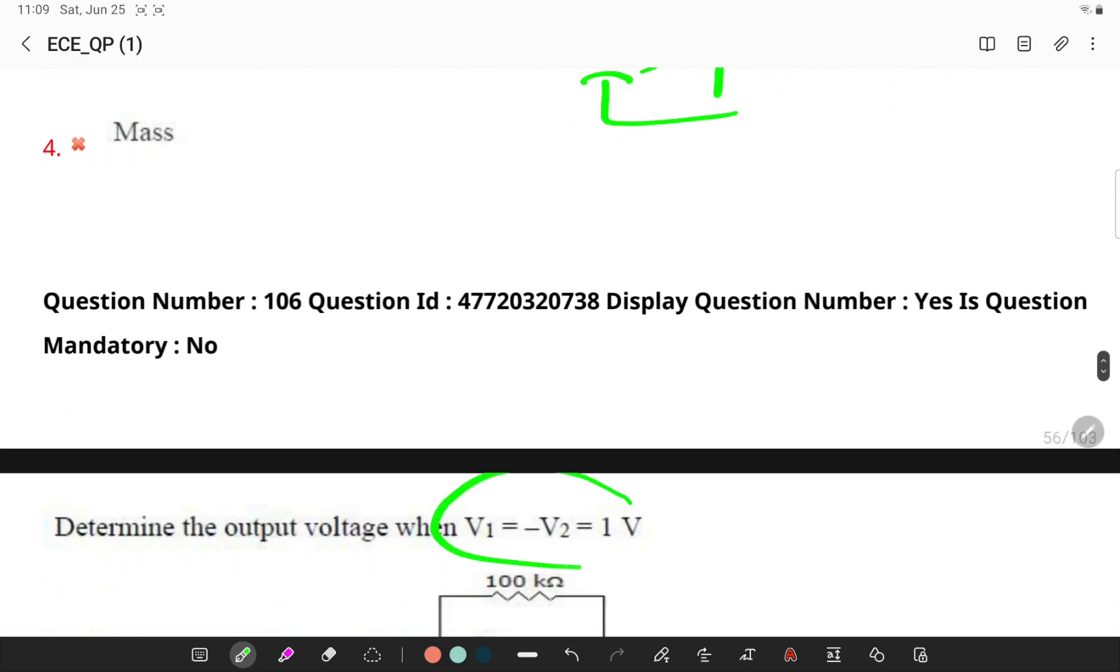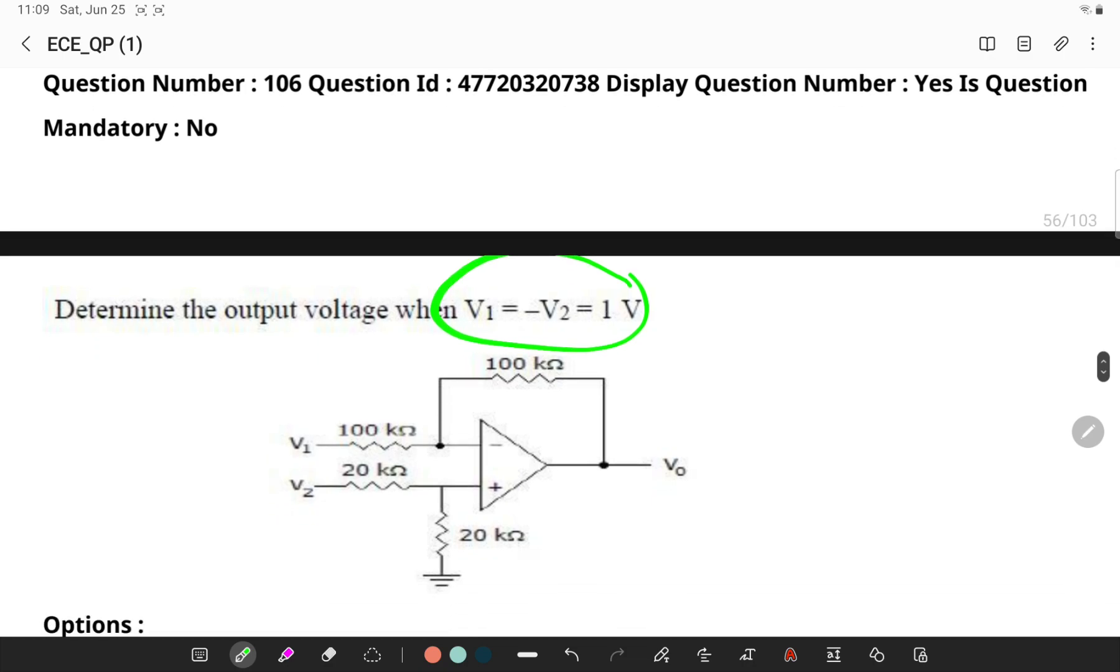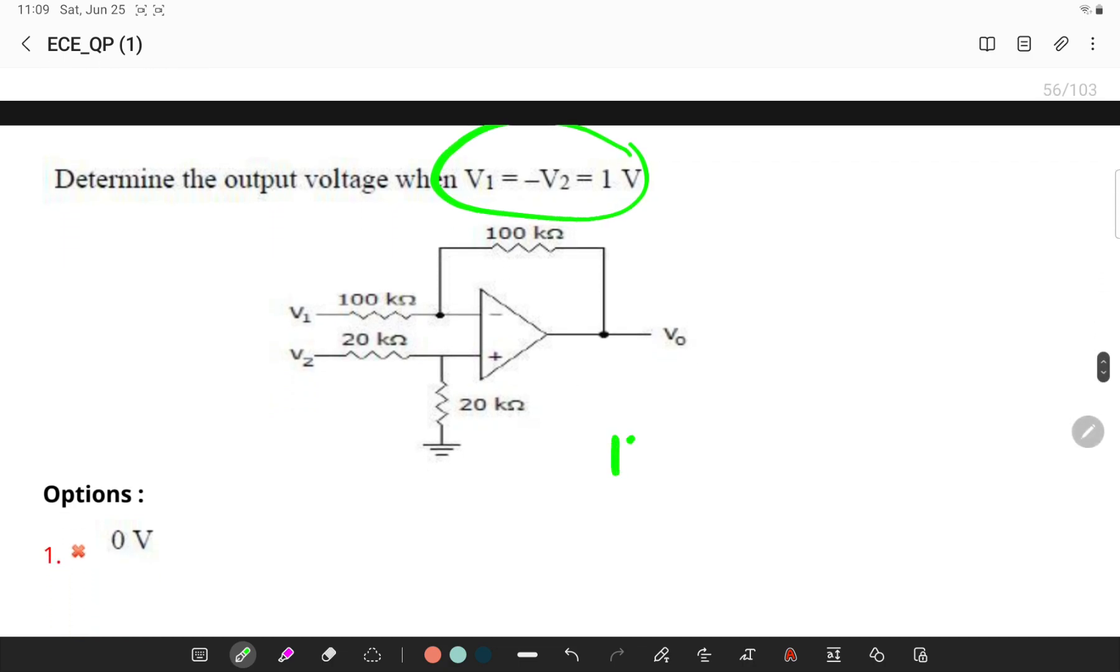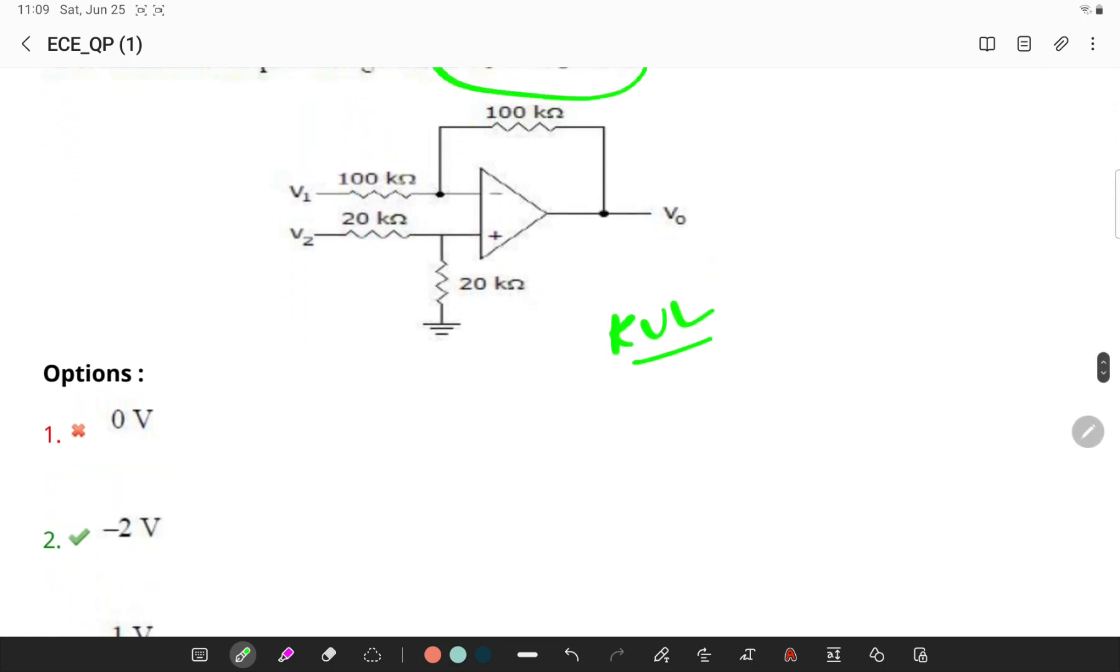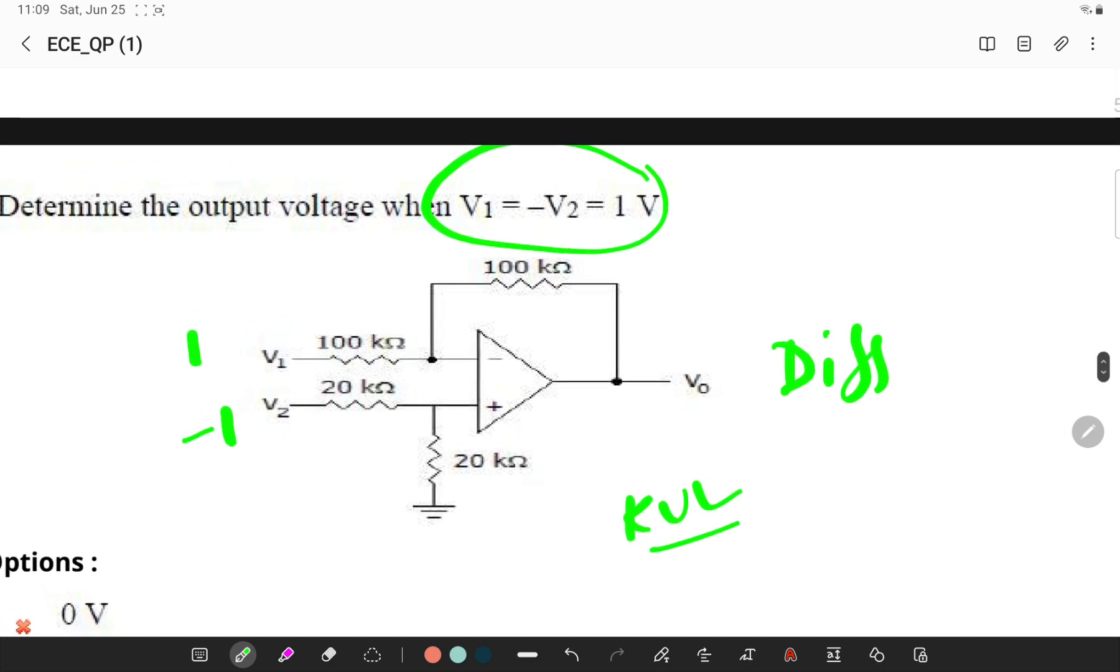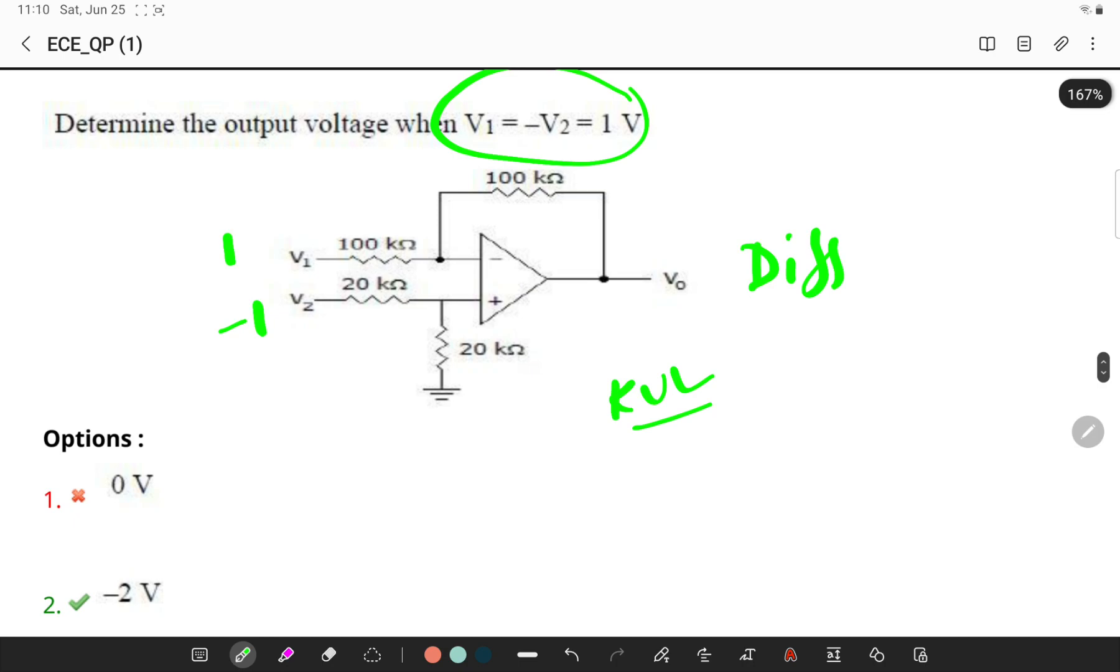Next, determine the output voltage. If you see this circuit, the output voltage is equal to the difference of the input voltages applied. You can apply a KVL here. This circuit is basically a difference amplifier. Here, it is minus 1 and 1. As you are applying input at both terminals, the answer will be minus 1 minus 1 which is minus 2.